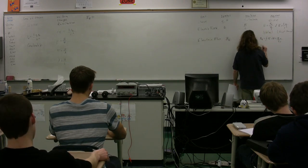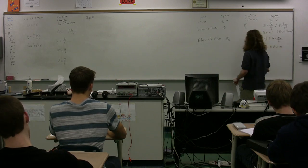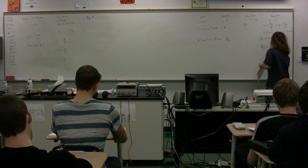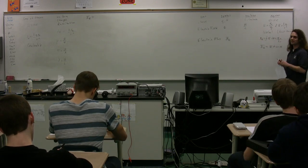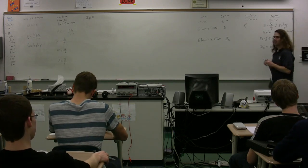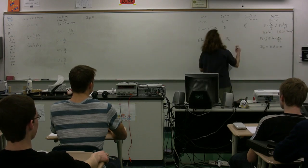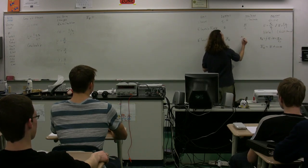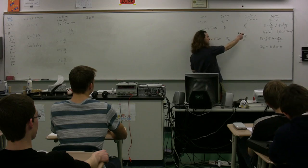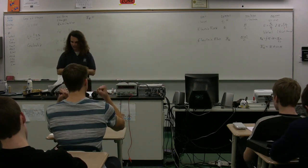We can also figure out the electric flux through a single surface — that would just be E times A times the cosine of theta, or the dot product of E and A. Therefore, the dimensions for electric flux are Newton meters squared over Coulombs — the electric field units (Newtons per Coulomb) multiplied by the area in meters squared.